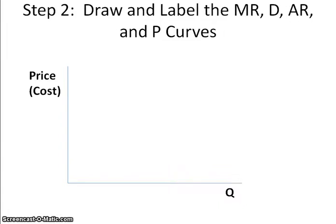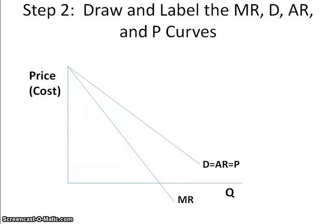Step 2: Draw and label the marginal revenue, demand, average revenue, and price curves for the monopoly graph. A monopoly is a price maker, so they have a downward sloping demand curve. Demand equals average revenue, which equals price. The marginal revenue curve is less than the demand curve because for each additional unit produced, not just the next unit but all previous units have to be lower in price, so marginal revenue is less than demand.